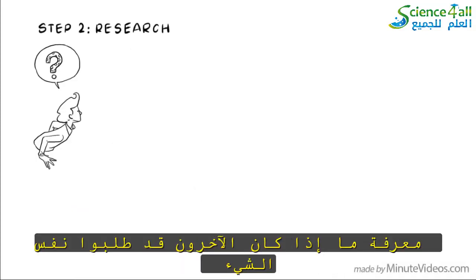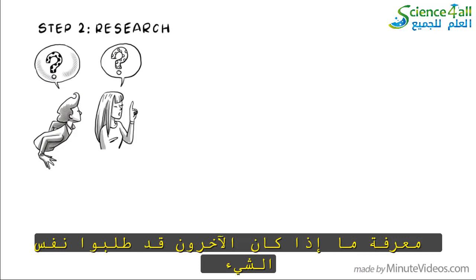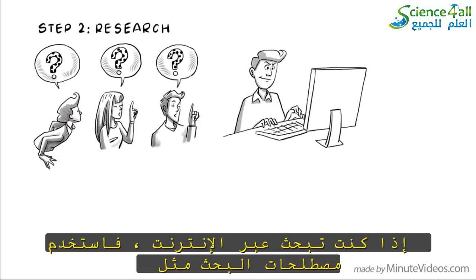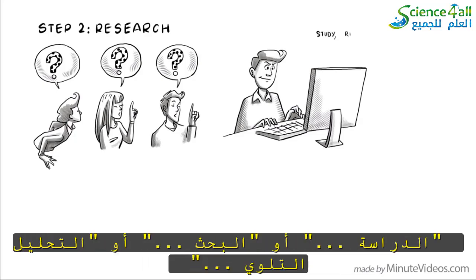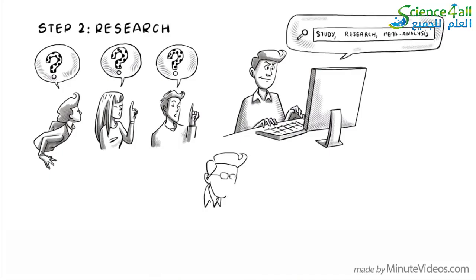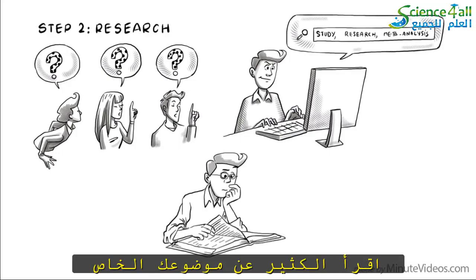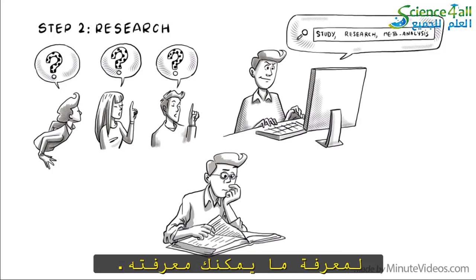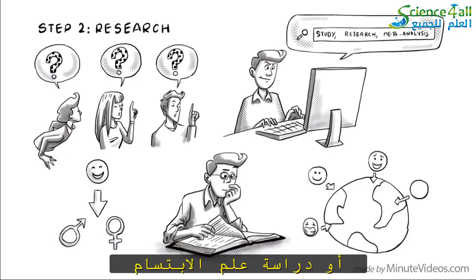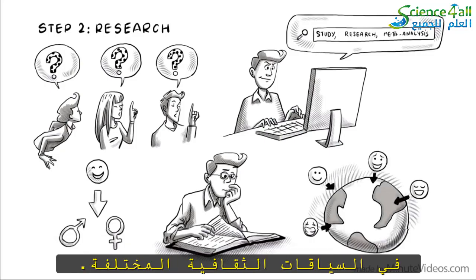Step 2: Research. Find out if other people have asked the same or similar questions. If you research online, use search terms like study, research, or meta-analysis, which is a summary of research for a specific topic. Read as much as you can about your particular subject. For example, research happiness based on gender or study the science of smiling in different cultural contexts.